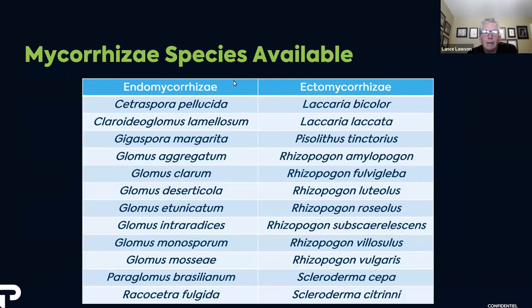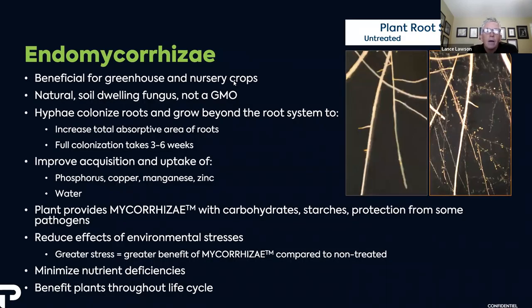Here's a list of available species. Endomycorrhizae has many species — one of the main ones used in growing media is Glomus intraradices. A lot of available options come with multiples of these so you can cover a wide range of plants you're trying to colonize. The main one we want to talk about today is endomycorrhizae because it benefits more greenhouse and nursery crops.